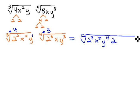On the second radical, on the 2, 3 times 3 is 9, on the x, 1 times 3 is 3, and on the y, 3 times 3 is 9.